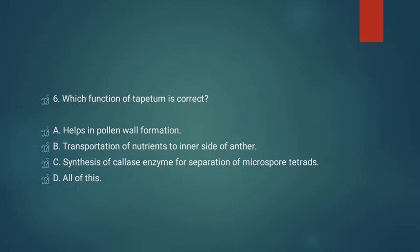Question number six: which function of tapetum is correct? Option A: helps in pollen wall formation. Option B: transportation of nutrients to inner side of anther. Option C: synthesis of callase enzyme for separation of microspore tetrads. Option D: all of these. This is a direct question — tapetum performs all the above functions, so answer D, all of these, is correct.